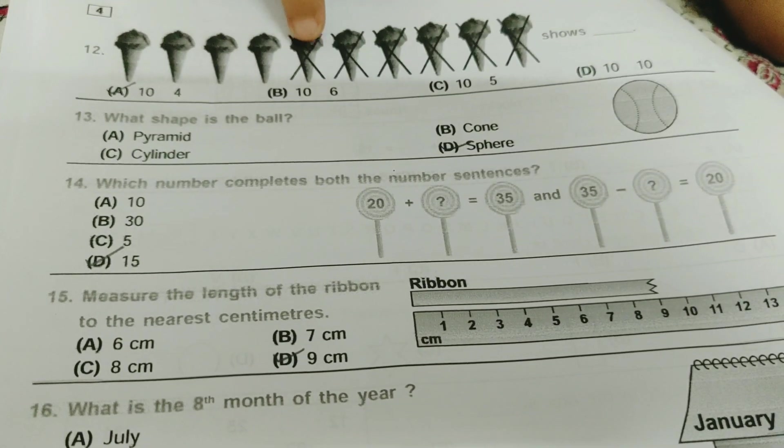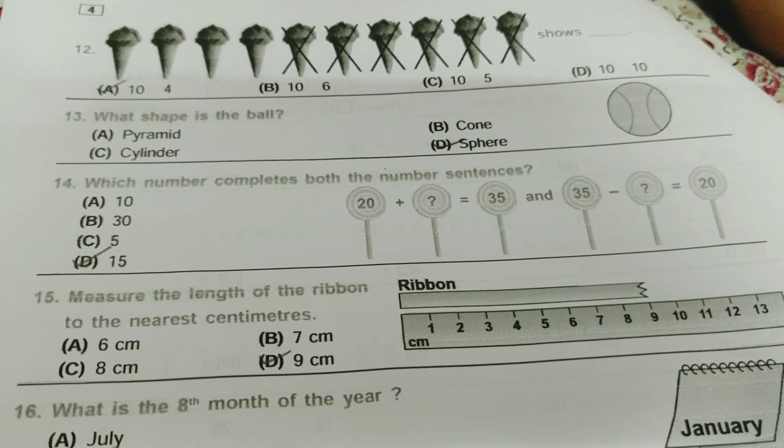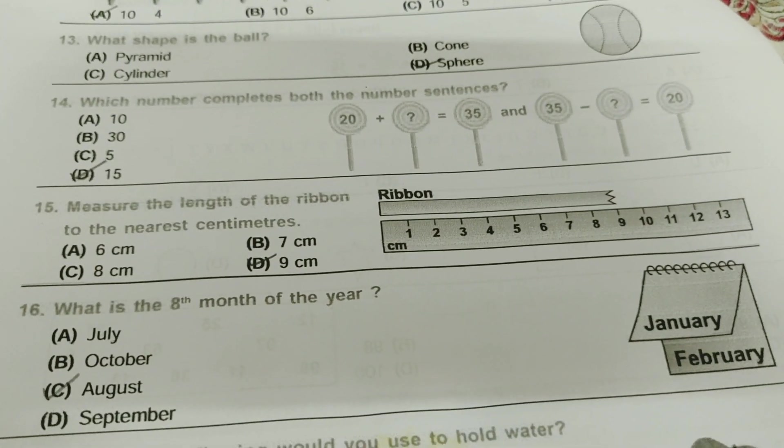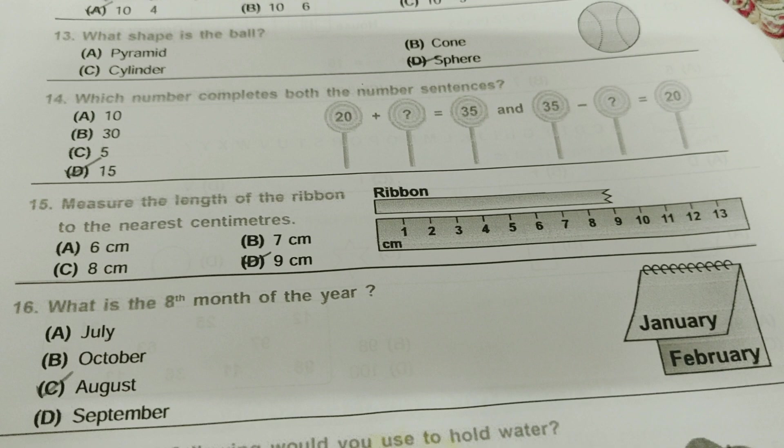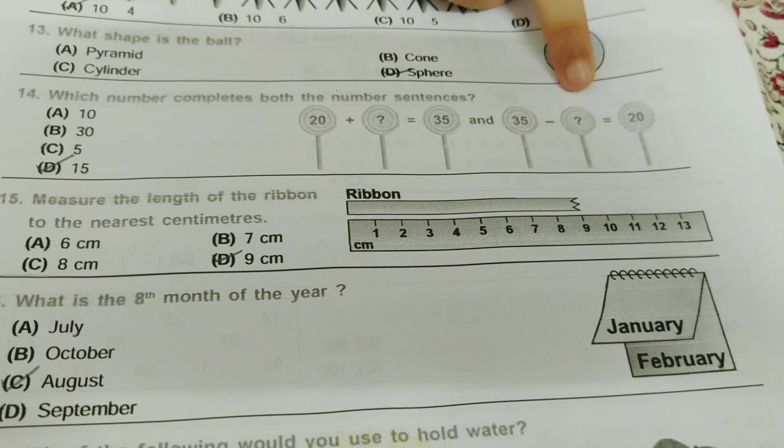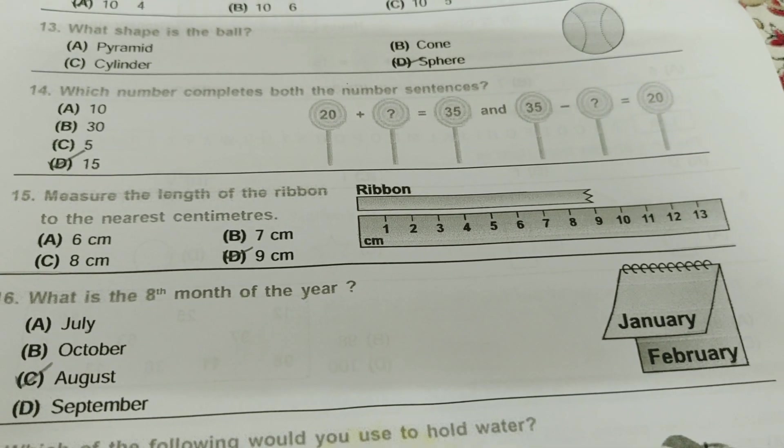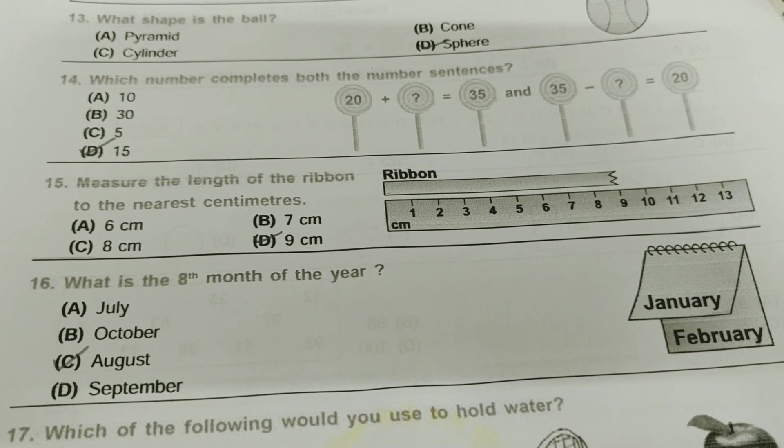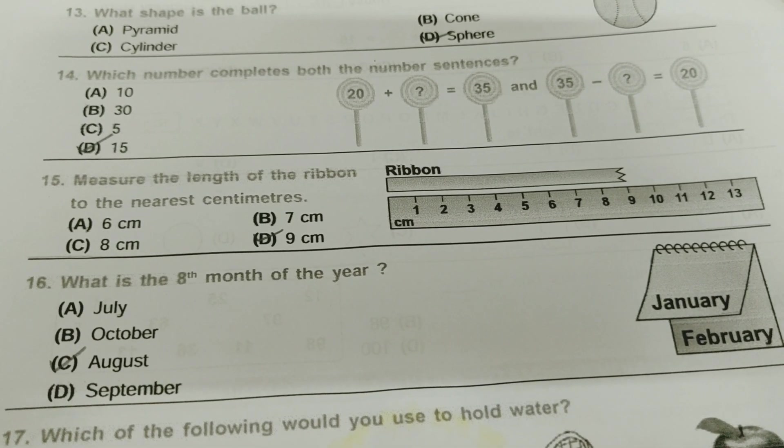What shape is the ball? It's real. Which number completes both the number sentences? 20 plus dash equals 35, 35 minus dash equals 20. So it will be same only guys, right? It's 8, it's 15.